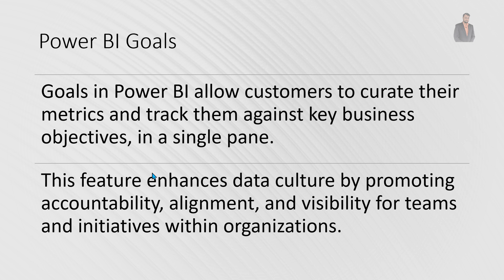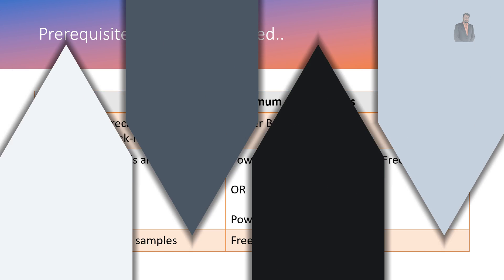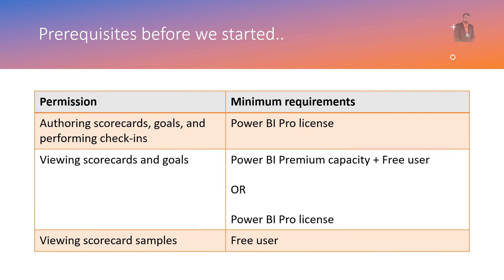Now, before we get started with Power BI Goals, we need to understand a couple of licensing requirements as well. Basically, Power BI Goals is a pro-only feature. You need at least a minimum pro-level license in order to get started with Power BI Goals. If you want to author the scorecard, goals, and perform the different check-ins, you need a minimum pro-license.